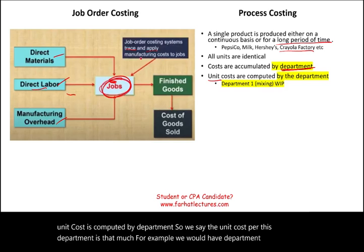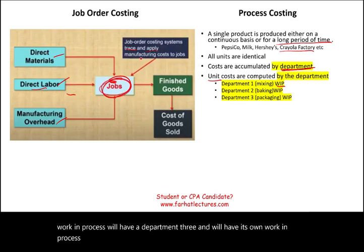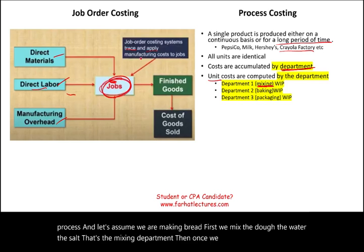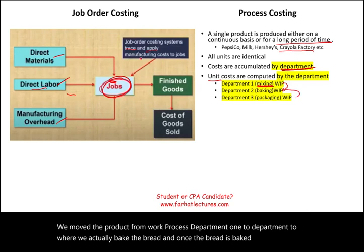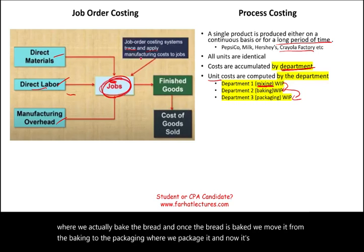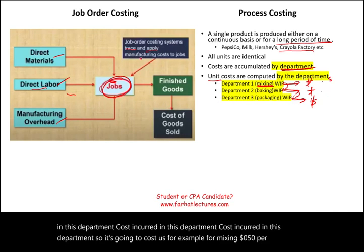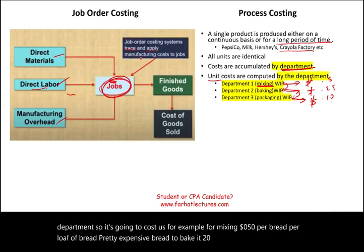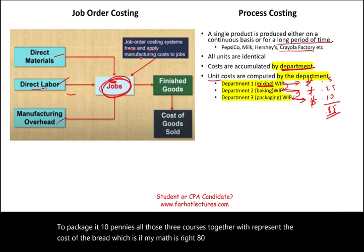For example, if we're making bread, department one is the mixing department where we mix the dough, water, and salt. Once mixing is 100% complete, we transfer the product to department two — the baking department. Once the bread is baked, it moves to packaging. Each department incurs its own costs: for example, 50 cents per loaf for mixing, 25 cents for baking, and 10 cents for packaging — totaling 85 cents per package.